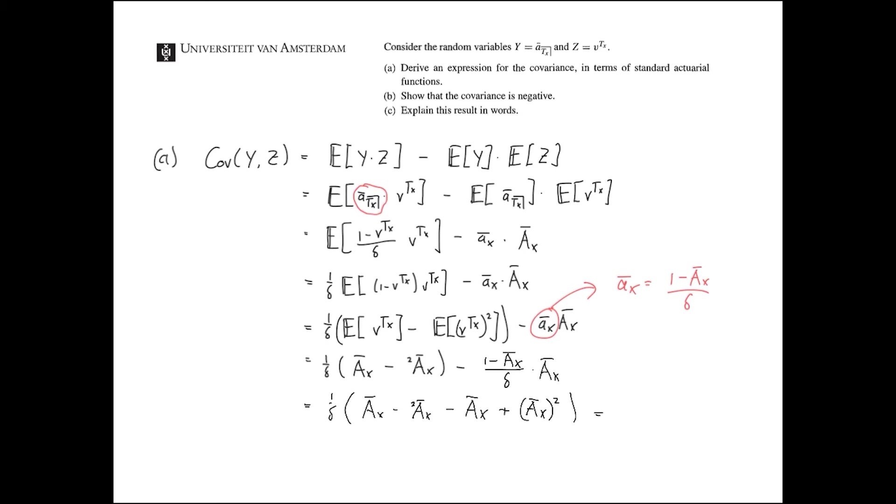And what does this finally give us? It gives us 1 over delta, times A x bar, squared, minus 2 A x. And this is the answer to the part A.